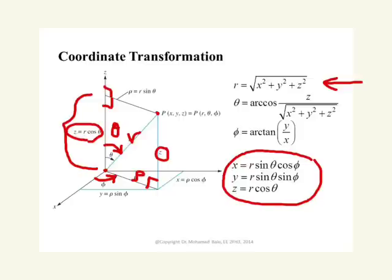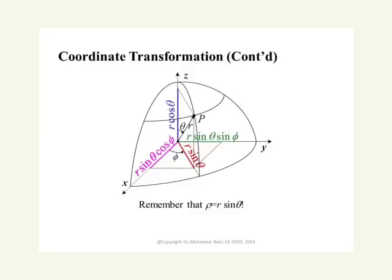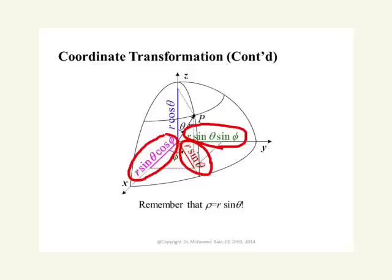In summary, in spherical coordinates: r is the distance from the origin, theta is the angle the position vector makes with the z-axis, and phi is the angle that the projection on the xy-plane makes with the x-axis. To go from spherical to Cartesian: project r onto the xy-plane to get ρ = r·sinθ, then x = r·sinθ·cosφ, y = r·sinθ·sinφ, and z = r·cosθ.